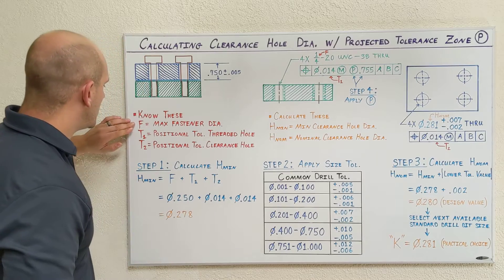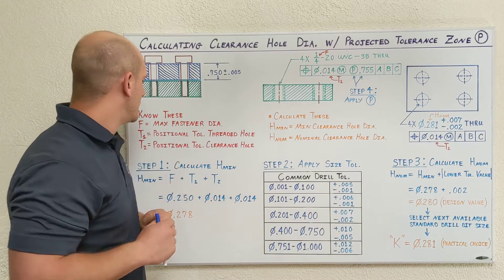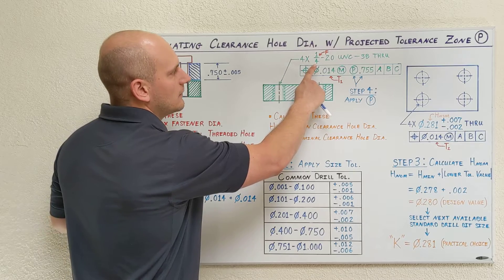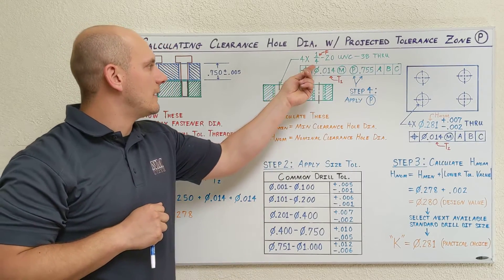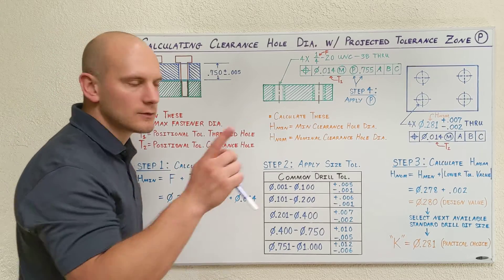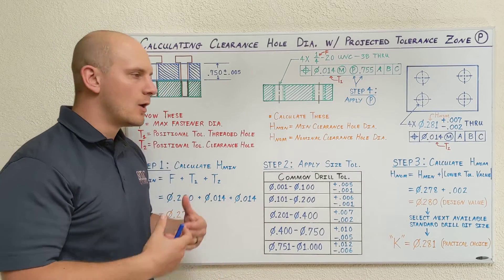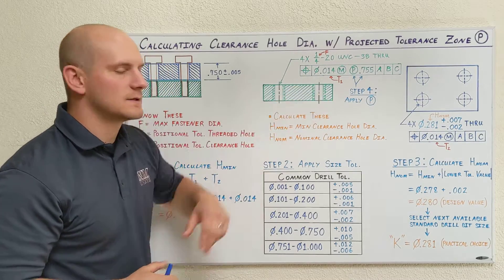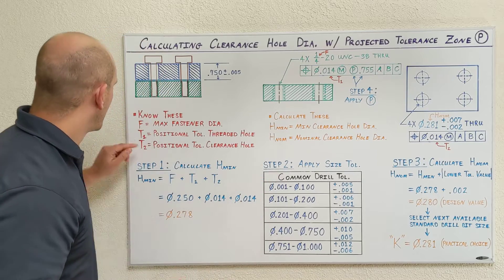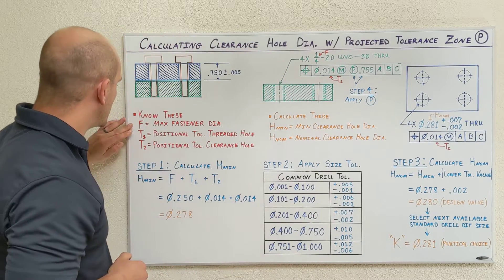To do that, we need to know these three values, which we can harvest from our mechanical data, and then we're going to calculate these two values. To start off with, we need to know F — our max fastener diameter. We can get that from our nominal value listed in our thread call-out. This value happens to be a quarter inch, so we'd use 0.250. For T1, we're going to use the positional tolerance applied to our threaded feature, which is right here. If you've never selected a positional tolerance for GD&T before, 14 thousandths is a great starting point — it's roughly equivalent to a plus or minus 5 thou locational tolerance. For T2, that's the positional tolerance applied to our clearance hole features — once again, 14 thousandths.